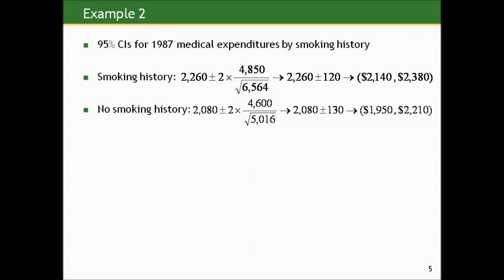Let's compute confidence intervals for medical expenditures by smoking history. For the group with a smoking history, we take the sample mean plus or minus two standard errors: $4,850 divided by the square root of 6,564, giving a confidence interval from $2,140 to $2,380. For those without a smoking history, the same operation gives a confidence interval from $1,950 to $2,210. Despite the large sample sizes, high variability in individual-level data meant large sample standard deviations, which fueled large standard errors.